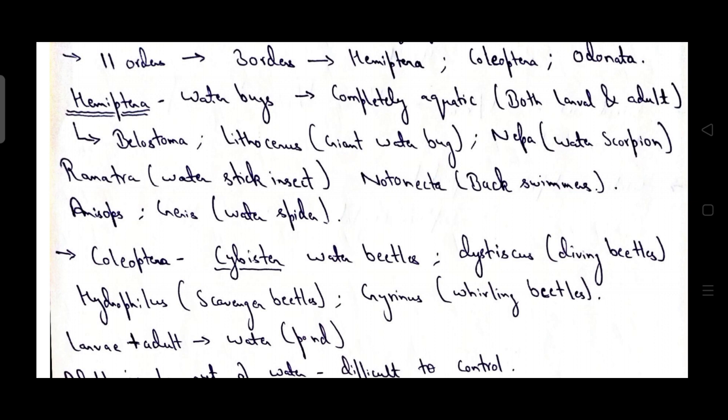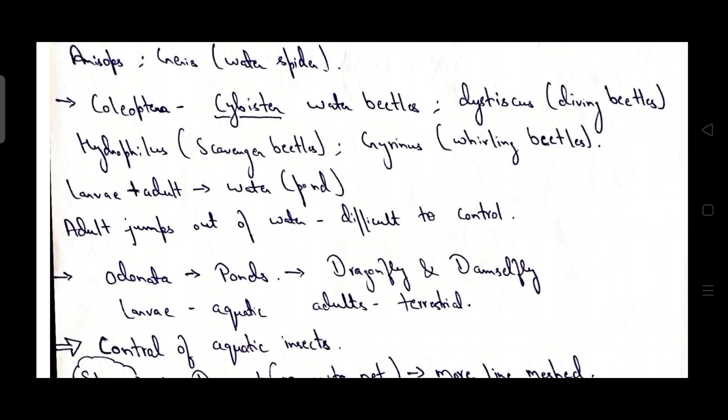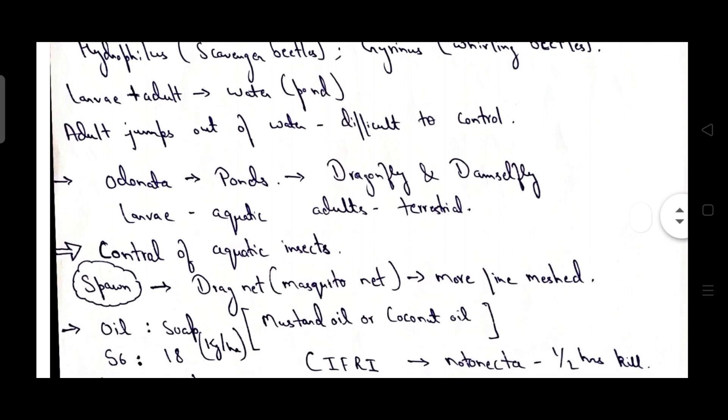Then coming to Coleoptera, that is second order. Cybister water beetles, Dytiscus diving beetle, Hydrophilus scavenger beetles, Gyrinus whirling beetle. Both larval as well as adult forms are aquatic and they prefer to live in pond environment. Adult jumps out of water in case of Coleopterans, that's why it is difficult to control adults of Coleopterans.